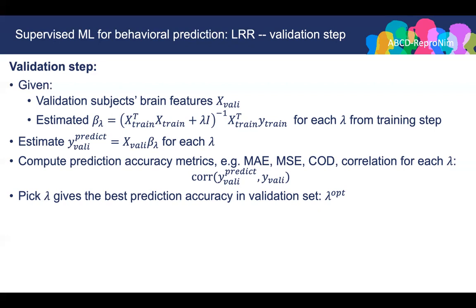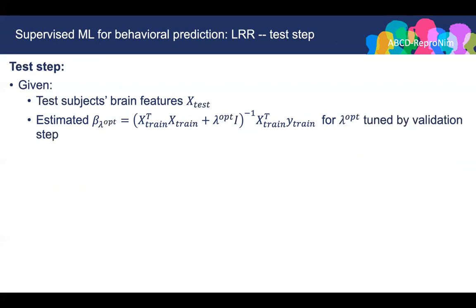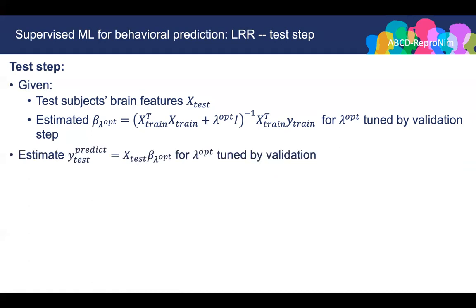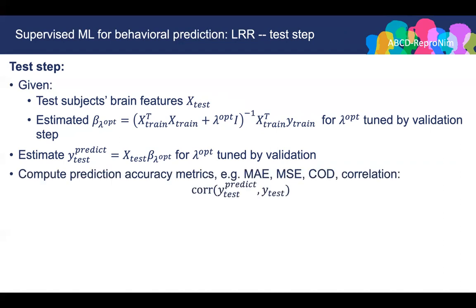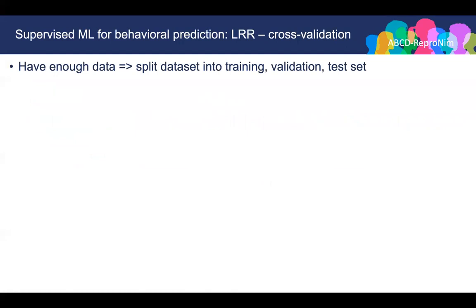Now in the test step, we have the test subjects' brain features X-test and the estimated beta for lambda-optimal. We can then predict behaviors for the test set with the optimal lambda tuned by the validation set. Finally, we report the prediction accuracies only using the test set. Of course, because we need to split the dataset into training, validation, and test, we definitely need to have enough data. However, if we only have limited data, we can use cross-validation.